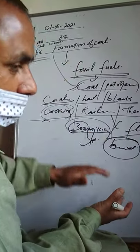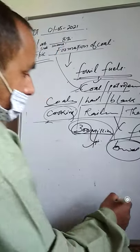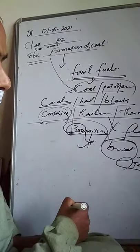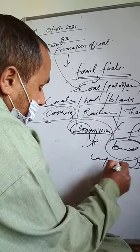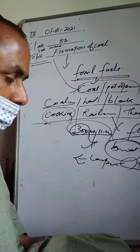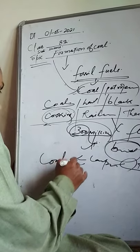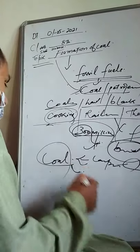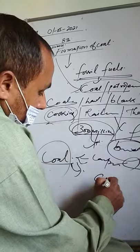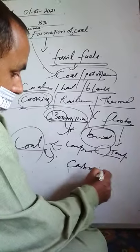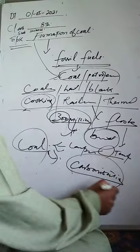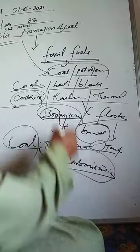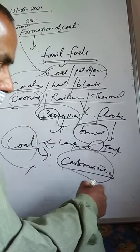Under high pressure and temperature, these plants were compressed over time in a slow process involving carbon formation. The process of coal formation is called carbonization. Coal is a fossil fuel.